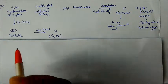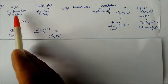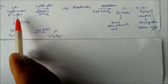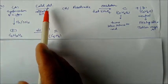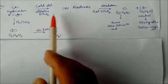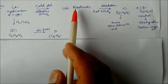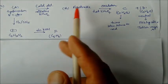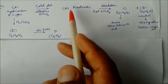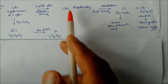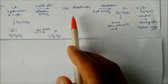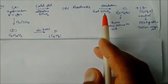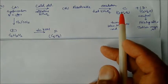In this question, the hydrocarbon contains five carbon atoms. In presence of cold dilute alkaline KMnO4 it is converted to compound B. B can be resolved into two products — two different optical isomers are possible, so it can be separated into two distinct products.